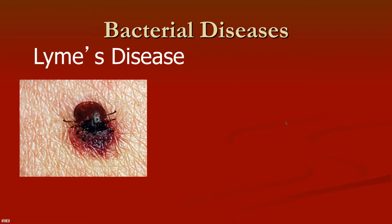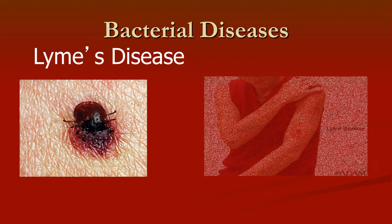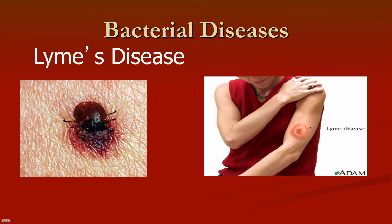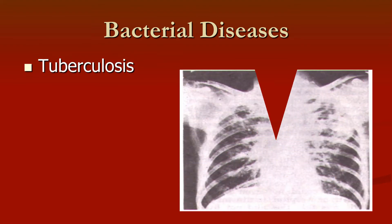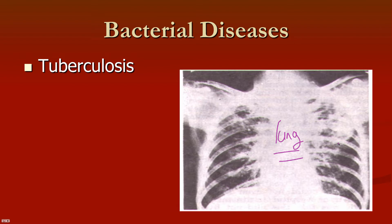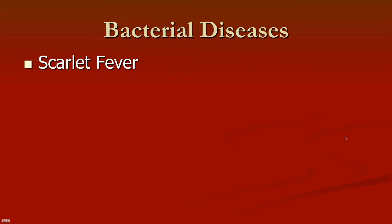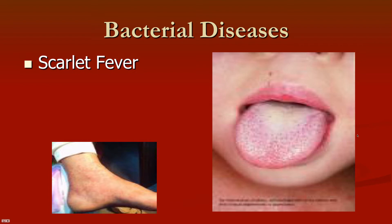Lyme disease is caused by infected ticks — typically you will see a bullseye rash where the tick bit you, and if you get that you need to go to the doctor. Tuberculosis is an ancient lung disease mentioned in the Bible that used to kill many people and has unfortunately made a return. Scarlet fever is a type of strep — you get either a red rash on your skin or sometimes on your tongue.